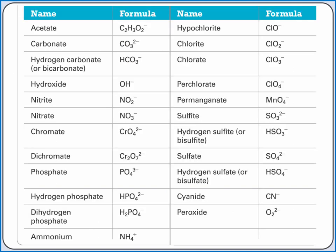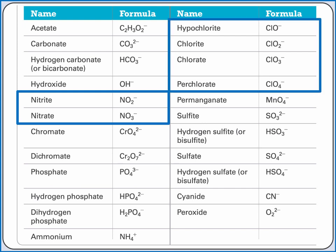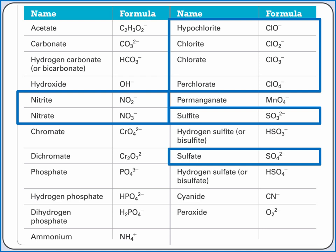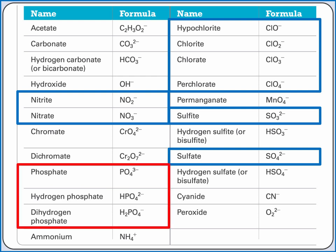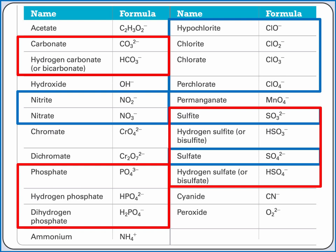This table contains common polyatomic ions. We can see our patterns at work for naming. For example, nitrate is NO₃⁻ and nitrite is NO₂⁻. We see the same pattern with the chlorate series and with sulfate and sulfite. We can also see our pattern of adding H⁺ with phosphate, sulfate, sulfite, and carbonate.